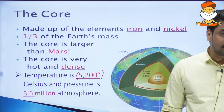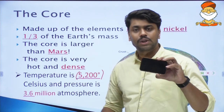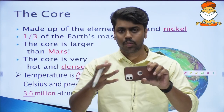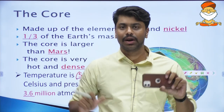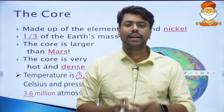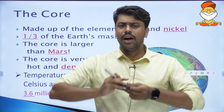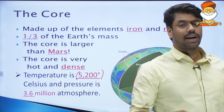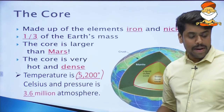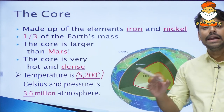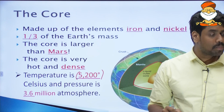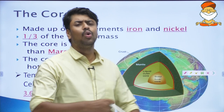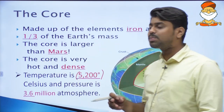Now, if we try to imagine the pressure: this phone at one atmospheric pressure is fine, maybe two or three atmospheric pressure and it would probably break. Now imagine 3.6 million times the atmospheric pressure — that is the pressure at the core. Because of this immense pressure, all elements are going to be drawn towards the center.